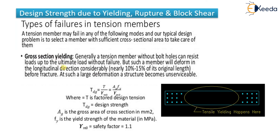As per IS 800:2007, the formula for gross section yielding is: Tdg = Ag × fy / γm0. Here, Tdg is the design tensile strength of the member due to gross section yielding, Ag is the gross area, fy is the yield strength, and γm0 is the partial safety factor.